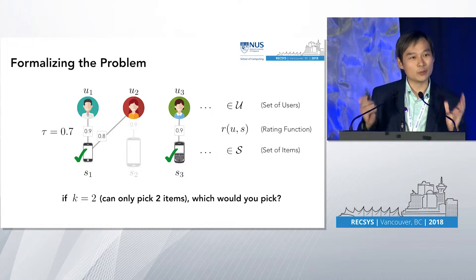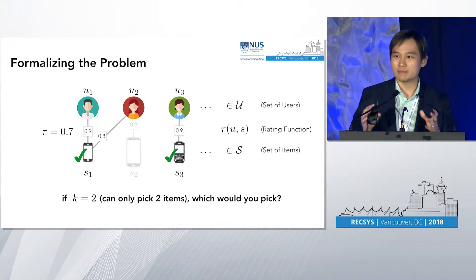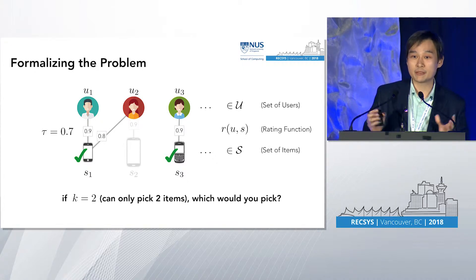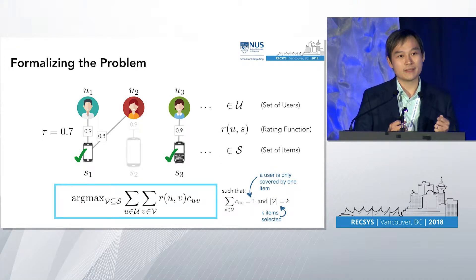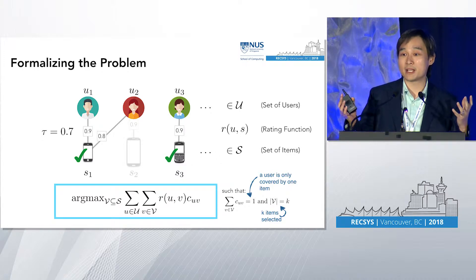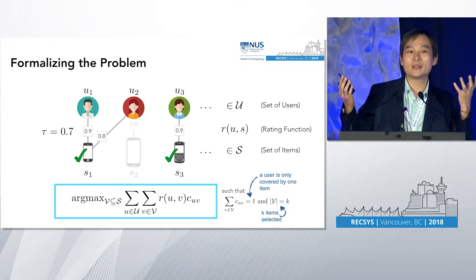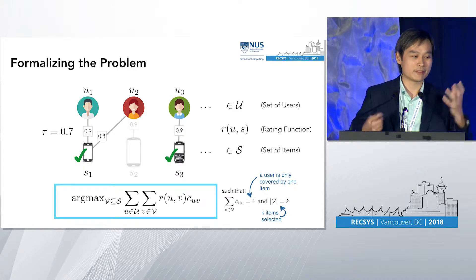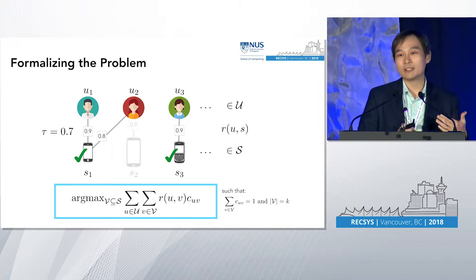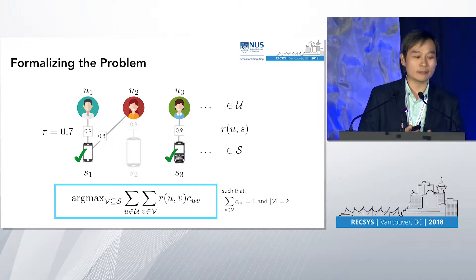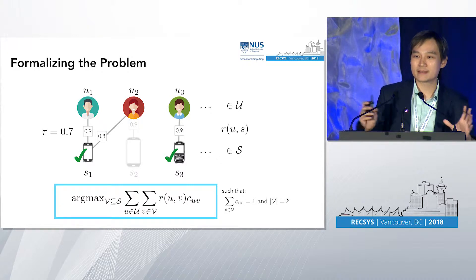How are we going to formalize this intuitive way of picking? One way is to produce a maximization problem: pick a set V that covers as many people as possible, and if two sets cover the same number of people, pick the one with the largest total rating. There are two constraints: a user is covered by only one item — no double counting — and you only get to pick K items. That's our setup.